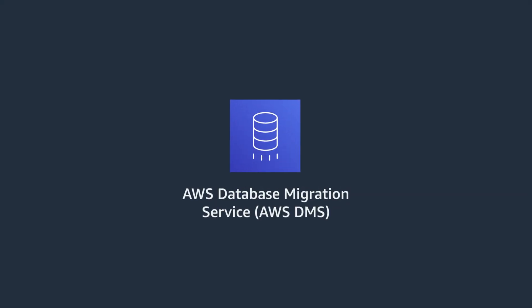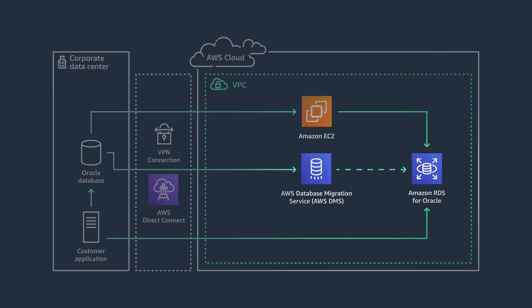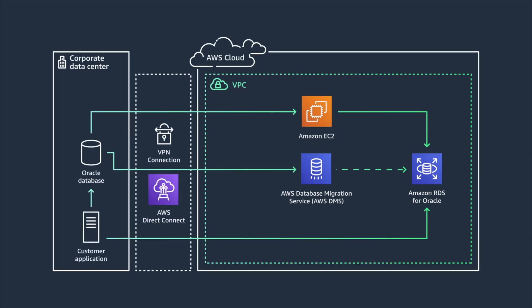Let's take a look at an online database migration using AWS Database Migration Service, DMS. DMS is a managed service that helps you migrate databases to AWS services efficiently and securely. It performs a full load of data from your source Oracle deployment to your RDS for Oracle cluster. It can then be switched to change data capture, that is CDC mode, to replicate any changes. After that, you change the application endpoint to the RDS cluster.